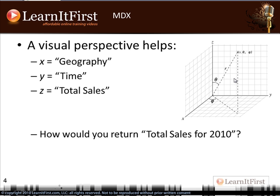What if I'm asked to return the total sales for 2010? Do I simply return where Y and Z meet, or do I return something else? Can you ignore geography when saying 'total sales for 2010'? This is where that implicit part comes into play. Analysis Services is actually going to say: you didn't specify geography, so I'm going to assume that you meant over all geography.